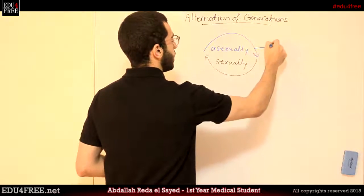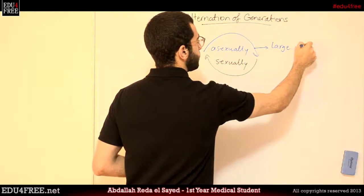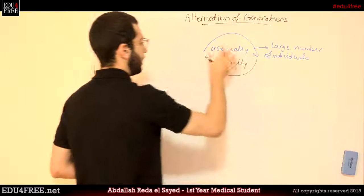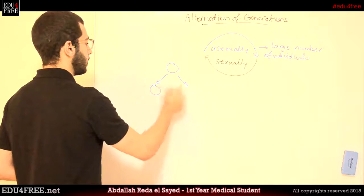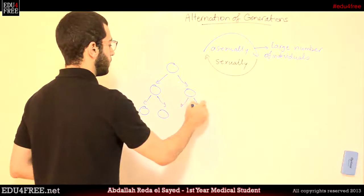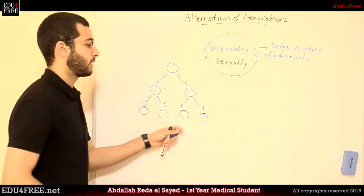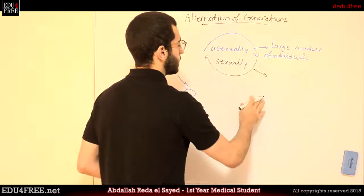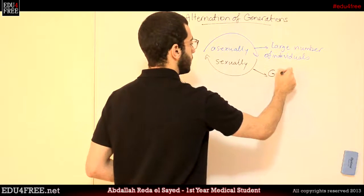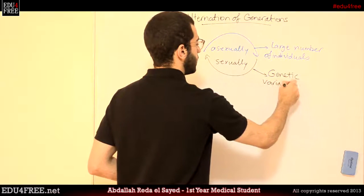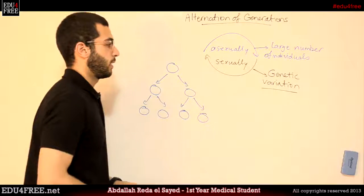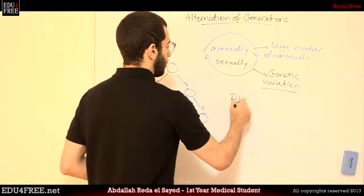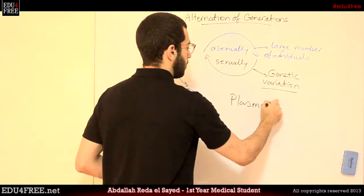For example, they get a large number of individuals because of the asexual reproduction, which occurs over a very short period of time. Also from the sexual reproduction properties, they get genetic variation, which helps them to adapt to different environmental conditions depending on the place that they are found in. We will take an example for this: Plasmodium malaria.